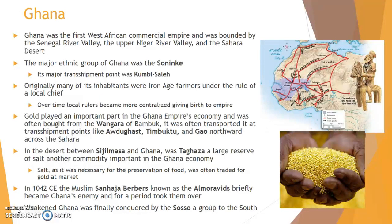A major catalyst for Ghana's growth was the gold mined from one of the richest gold fields in Africa: Bambuk. Soninke merchants bought gold from the Wangara of Bambuk, who lived in present-day Senegal and the Gambia, and often transported it via the Tuareg from transshipment points like Audaghost, Timbuktu, and Gao northward toward Morocco, from where goods were distributed across North Africa as far as the Mediterranean coast. In the desert between Sijilmasa and Ghana was Taghaza, the location of great quantities of salt deposited during the evaporation of an ancient Saharan sea.